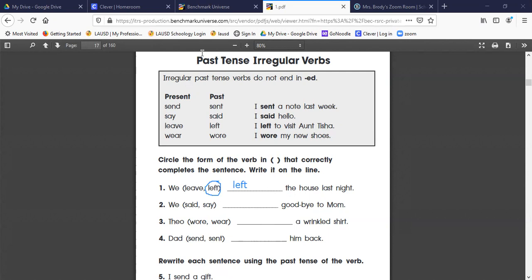Number two: we said or say goodbye to mom. But now we want the past tense, so we said. Going to circle that part and then we'll write it on the line. S-A-I-D, said.